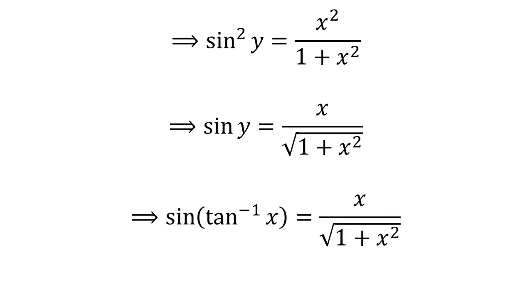As we had assumed y is equal to arc tangent of x, this implies that sine of arc tangent of x is equal to x divided by the square root of 1 plus x squared.